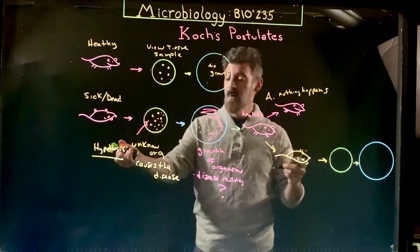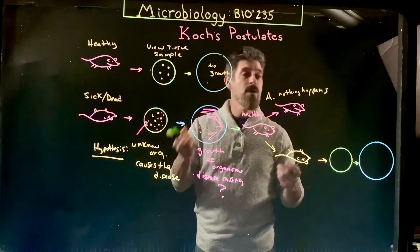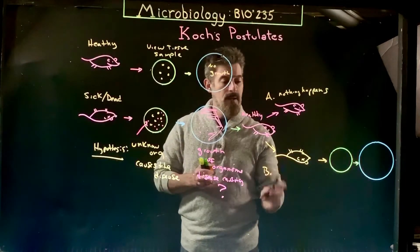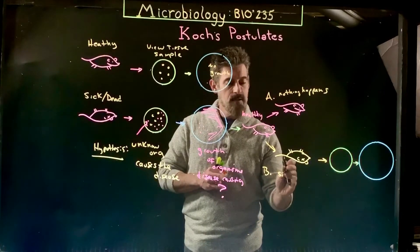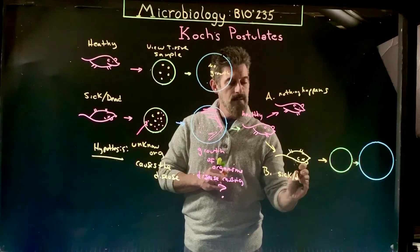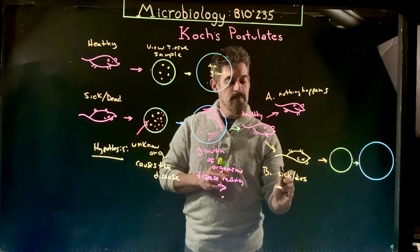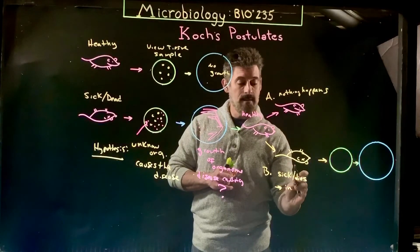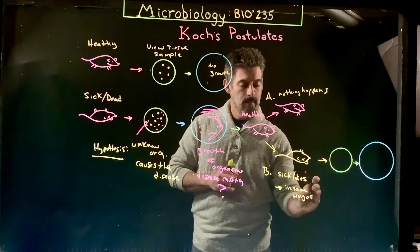So two options: Option A is nothing happens. If that was the case, we would reject this hypothesis and we would say, 'Nope, that unknown organism does not cause the disease.' And B, it does cause the disease—the organism gets sick or dies. The second thing you have to also evaluate is it's in the same way as the original.